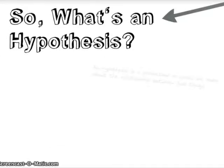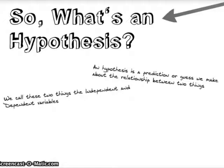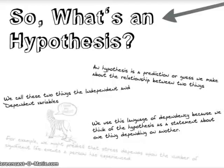First of all, what's a hypothesis? We say it's a prediction or a guess we make about the relationship between two things, and we call these the independent and the dependent variables. We use this language of dependency because we think of the hypothesis as a statement about one thing depending on another.